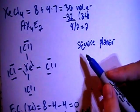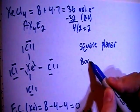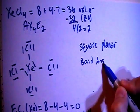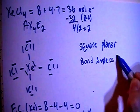In terms of bond angles, for square planar, the bond angle between each bond is going to be approximately 90 degrees.